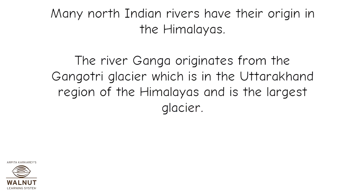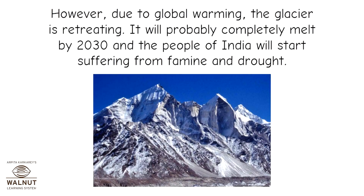Many North Indian rivers have their origin in the Himalayas. The river Ganga originates from the Gangotri Glacier, which is in the Uttarakhand region of the Himalayas and is the largest glacier. However, due to global warming, the glacier is retreating. It will probably completely melt by 2030, and the people of India will start suffering from famine and drought.